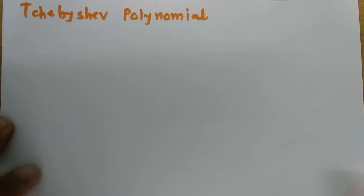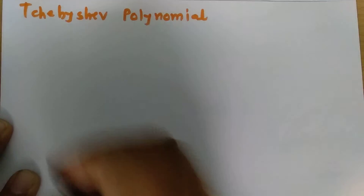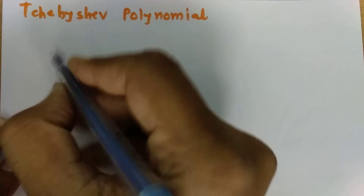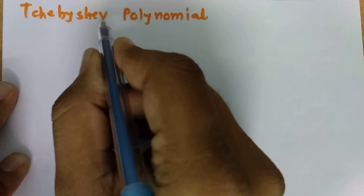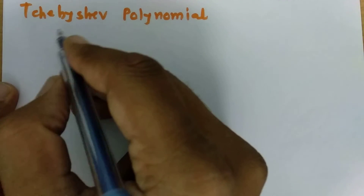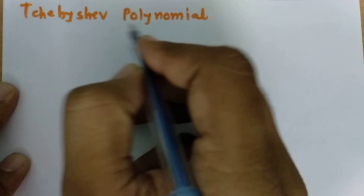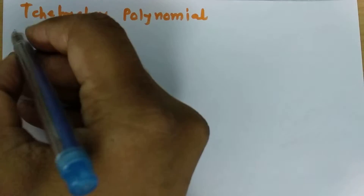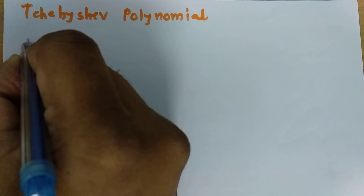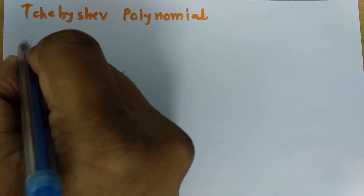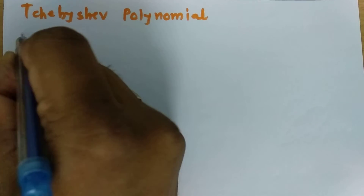Welcome to Antenna and Wave Propagation Playlist. In this session, I will be going to explain Chebyshev Polynomial. On the name of Chebyshev, the first letter T is used as a symbol.